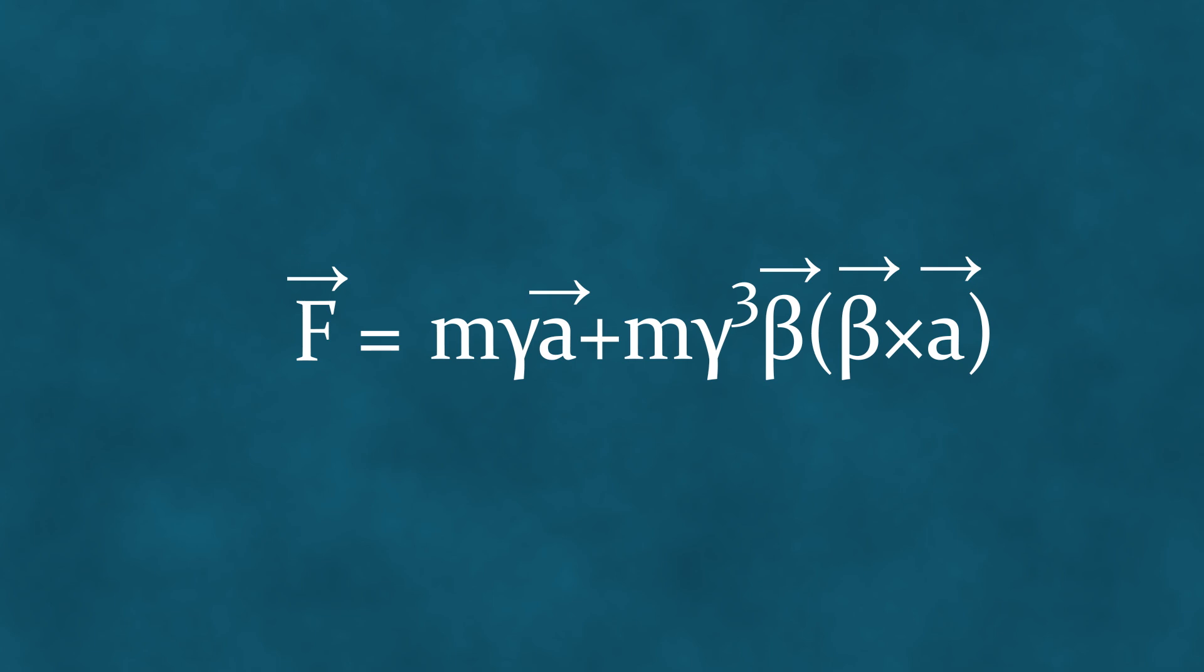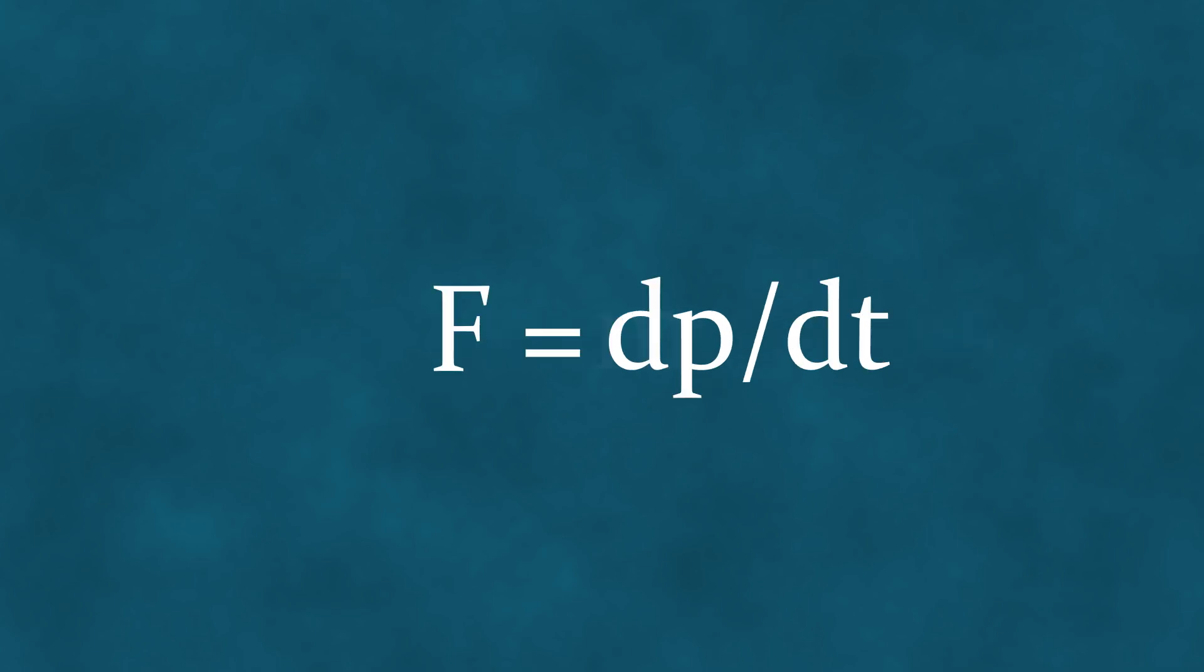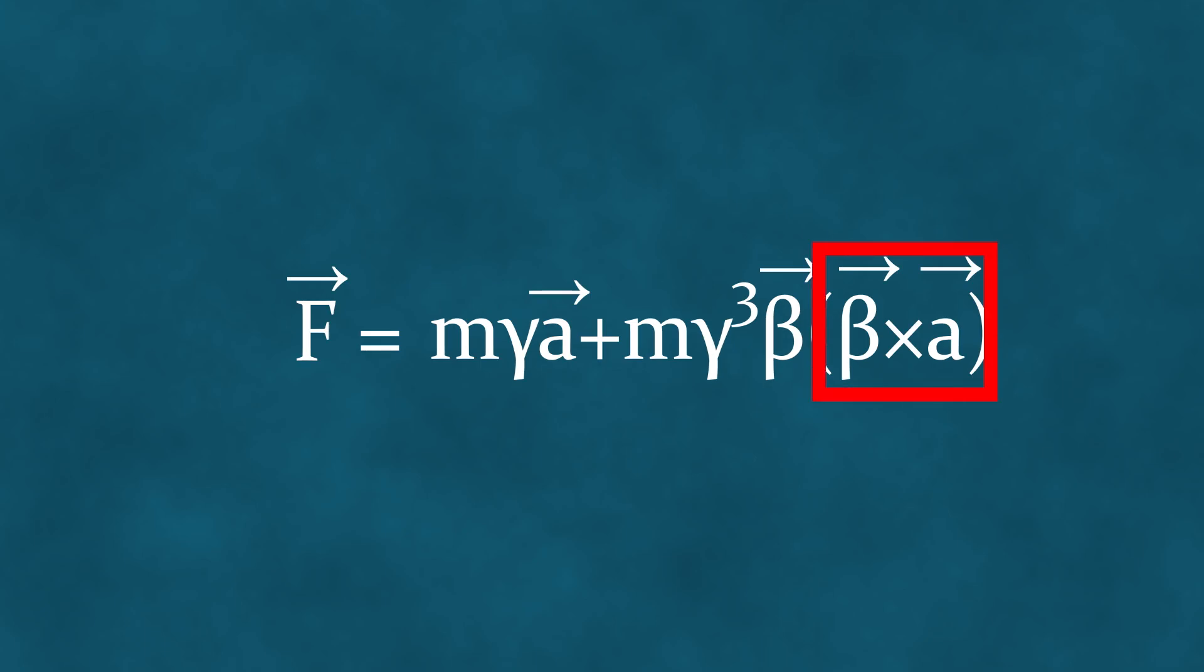However, at high speeds, the relationship between force, mass, and acceleration takes on an unfamiliar form. In this formula, the direct cause and effect relationship between force, mass, and acceleration that we are accustomed to is absent. Inertia, that is, how much an object resists attempts by a force to accelerate it, turns out to depend not only on mass but also on speed, and most interestingly, on the angle between the velocity and the direction of the applied force. In other words, it turns out that at high speeds, the mass of moving bodies is no longer a measure of their inertia, that is, the proportionality coefficient between force and acceleration.